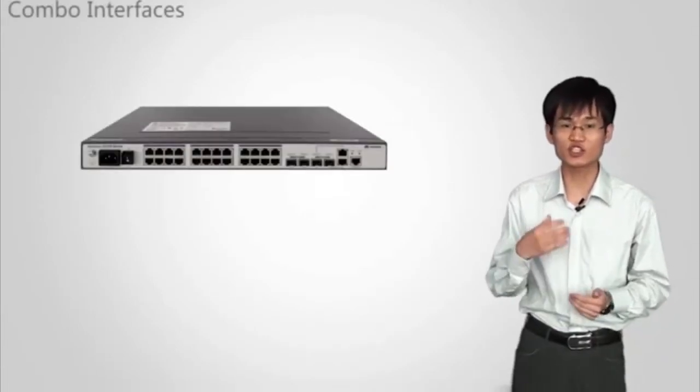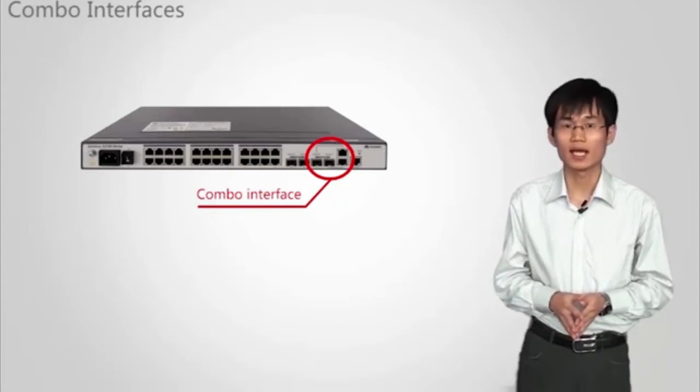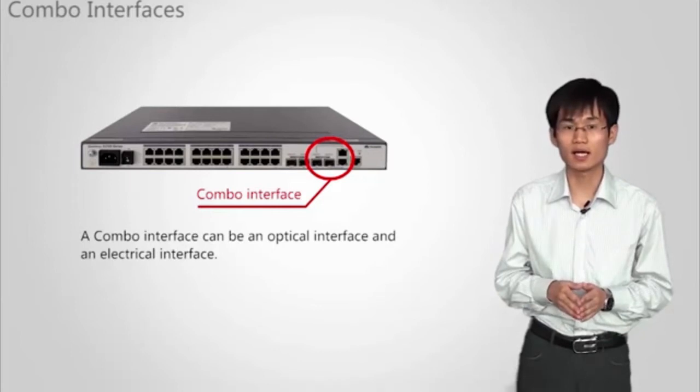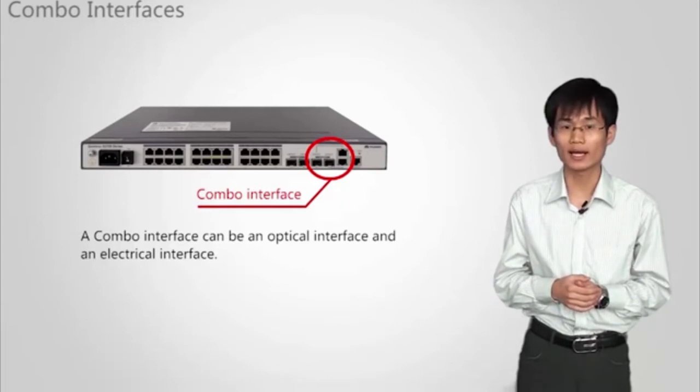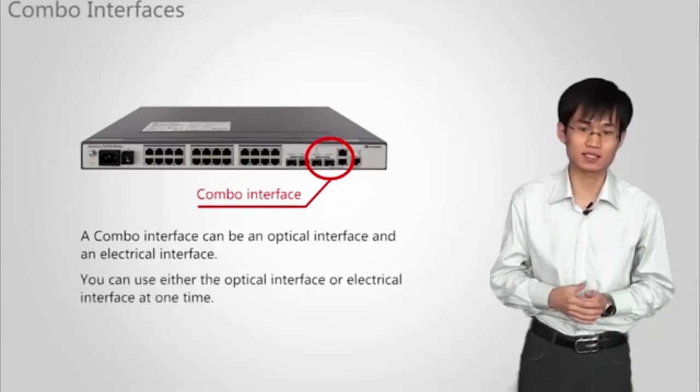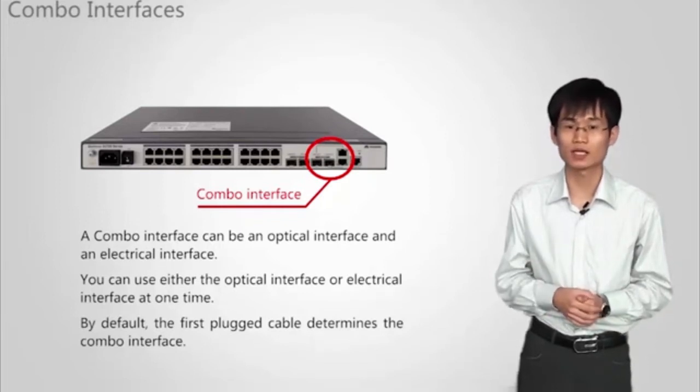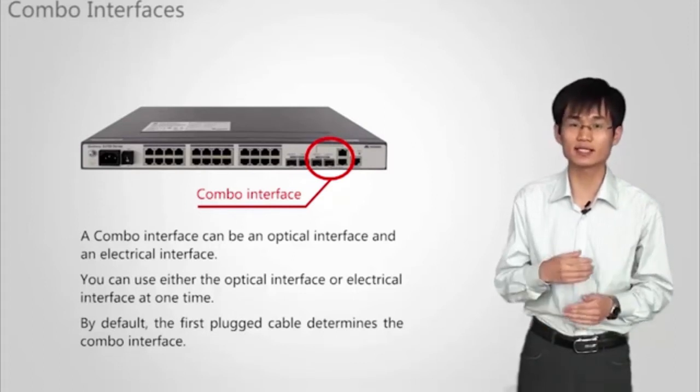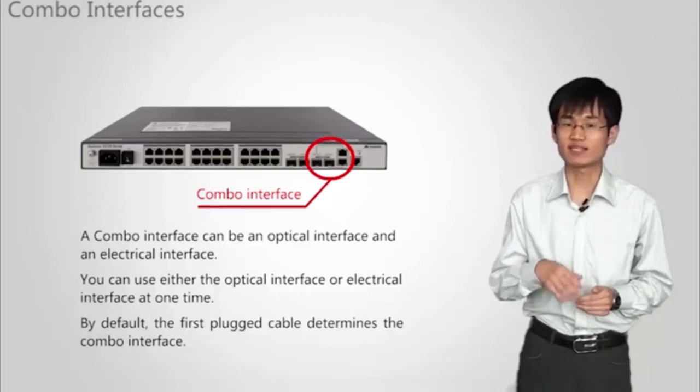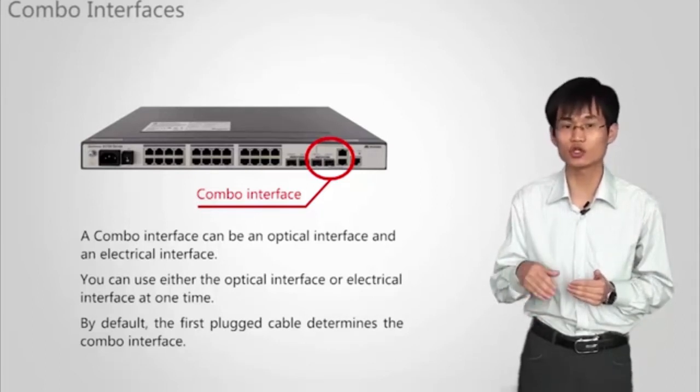Huawei Enterprise case-shaped TP-series switches provide multiplexing combo interfaces as upstream interfaces, and you can use either the optical or electrical interface at one time. The combo interface has one optical interface and one electrical interface on the panel and has two forwarding interfaces inside the device. When one interface is activated, the other interface is automatically disabled. By default, a combo interface works in auto mode. In auto mode, if the electrical interface is connected to a network cable first, the combo interface works as an electrical interface to transmit data. If the optical interface is connected to a fiber first, the combo interface works as an optical interface to transmit data.